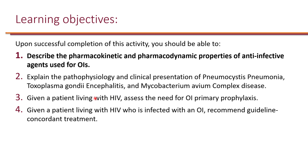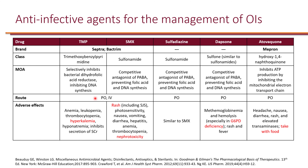The first learning objective is to describe the pharmacokinetic and pharmacodynamic properties of anti-infective agents used for opportunistic infections. Trimethoprim-sulfamethoxazole — brand names Bactrim or Septra — is by far the most commonly used agent. It is available as PO and IV, though PO is most common because the IV formulation has very limited stability.